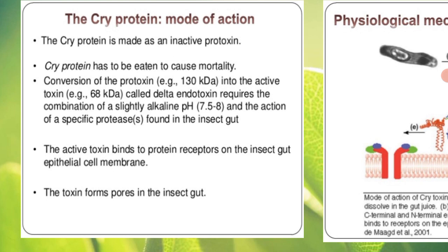Therefore, the protoxin will convert into the active cry toxin inside the insect gut. Once activated, the active cry toxin will bind to the receptors on the insect gut — the receptors present in the epithelial cell membrane of the gut of the insect. After attachment with the receptors, the cryoproteins or cry toxins will produce pores in that epithelial layer, in the epithelial cell membrane.